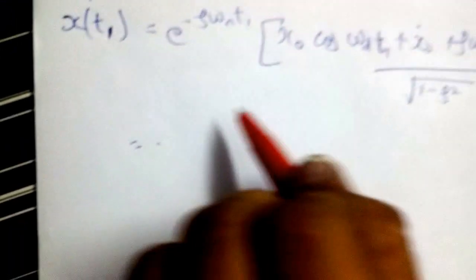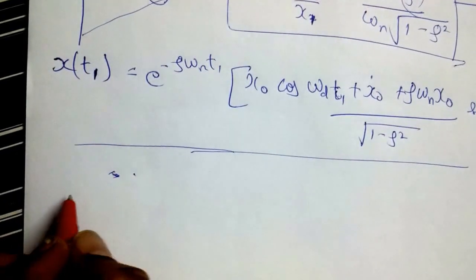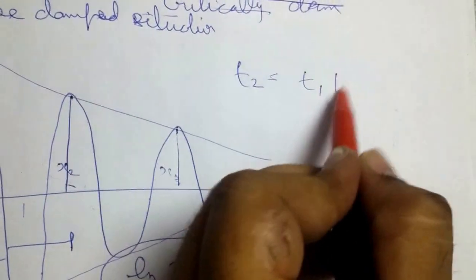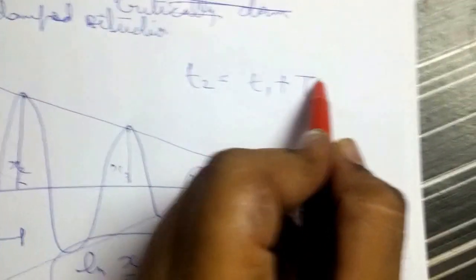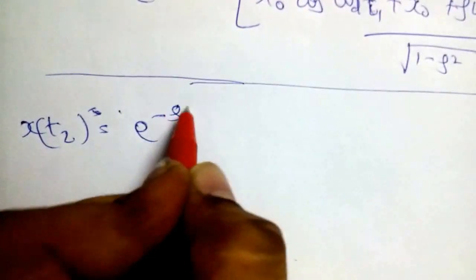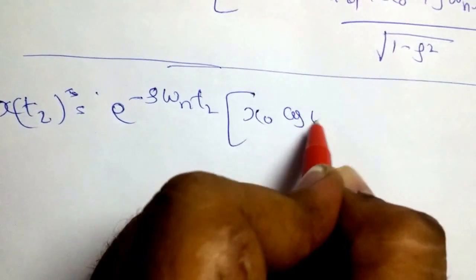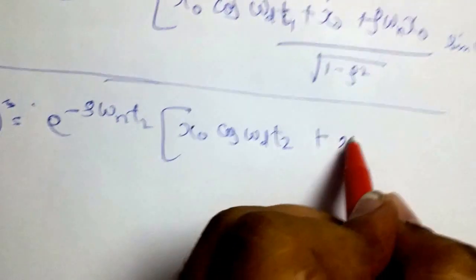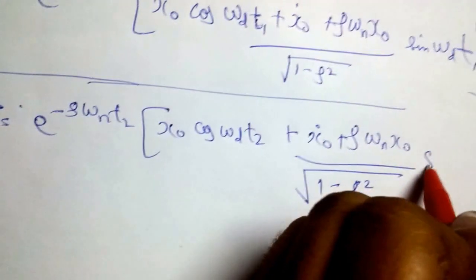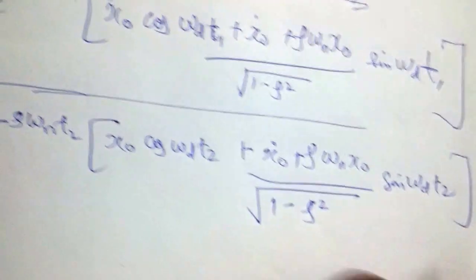This is the amplitude of vibration at time t1. The next amplitude will occur at time t2, where t2 equals t1 plus T — the natural time period, i.e., the time required to complete one full cycle of vibration. So x(t2) equals e^(−ζω_n t2) × [x0 cos(ω_d t2) + (ẋ0 + ζω_n x0) / √(1 − ζ²) × sin(ω_d t2)].